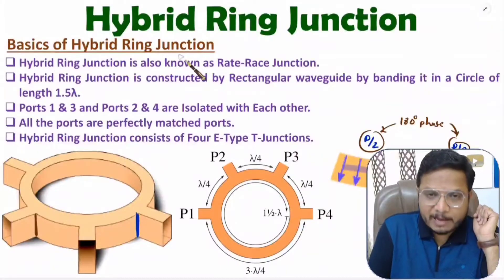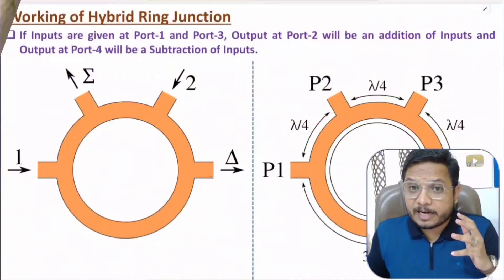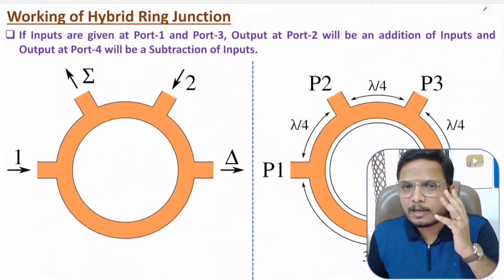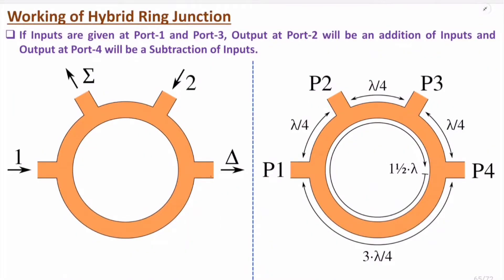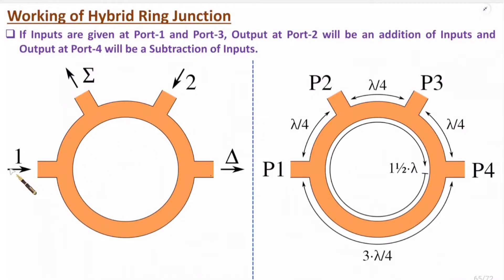Now I'll explain the working of hybrid ring junction. Hybrid ring junction can be used for addition and subtraction of two input signals. Looking at the top view, port 1 and port 3 are input ports. The output at port 2 is the addition of these two signals, and the output at port 4 is the subtraction of these two input signals.